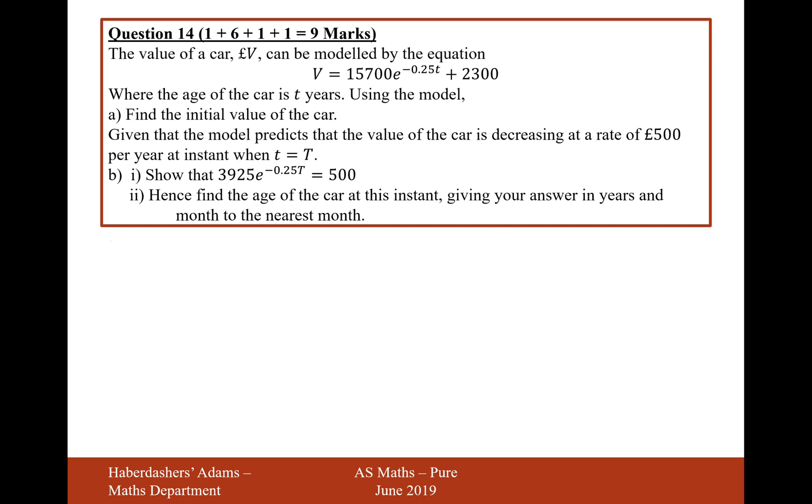So this is going to be an easy part of the question, that's just when t is equal to 0. So when t equals 0, e to the power of 0 is 1. So then the value is going to be 15,700 and 2,300. So it's going to be 19,000 pounds, the value of the car initially.